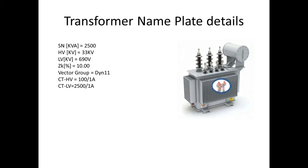Transformer nameplate details: the transformer is 2500 KVA rating. HV side voltage is 33 KV. LV side is 690 V. Impedance percentage is 10%. Vector group is Dyn11. HV side CT ratio is 100/1. LV side CT ratio is 2500/1.